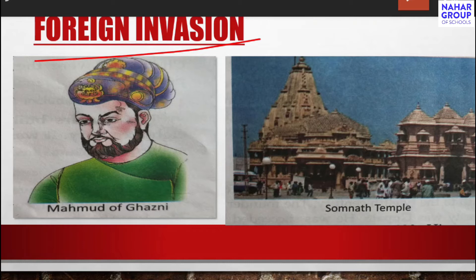Mahmood of Ghazni invaded India 17 times. He attacked places like Punjab, Peshawar, Multan, Mathura, Thaneshwar, and Somnath. The Somnath temple in Gujarat was plundered and all its wealth was taken away to Ghazni. Even the precious stones embedded in the temple walls were taken out.